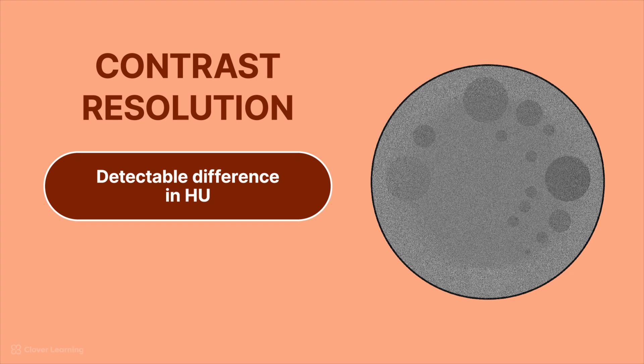Basically, the contrast resolution phantom uses a base material that's usually some type of polymer or something similar to water. And then it includes several areas with different size spheres that each have their own difference in Hounsfield units. Each area represents a different level of physical contrast.